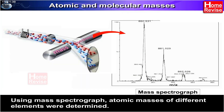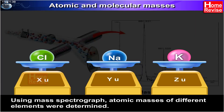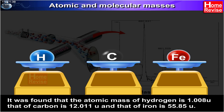Using a mass spectrograph, atomic masses of different elements were determined. It was found that the atomic mass of hydrogen is 1.008 u, that of carbon is 12.011 u, and that of iron is 55.85 u.